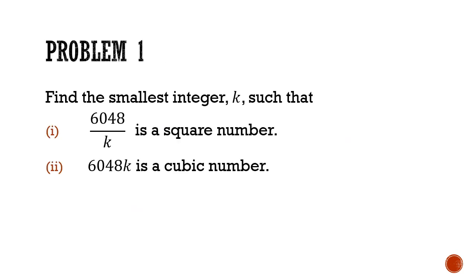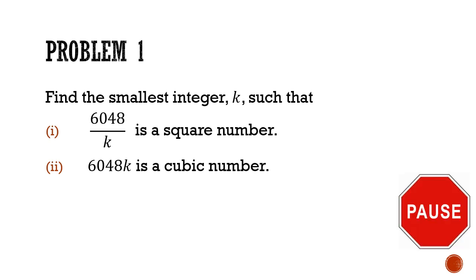Let's now look at some problems involving squares and cubes. Problem number 1: find the smallest integer k such that 6048 divided by k is a square number, and separately, find another value of k such that 6048 times k is a cubic number. Pause the video here and give this question a good try.